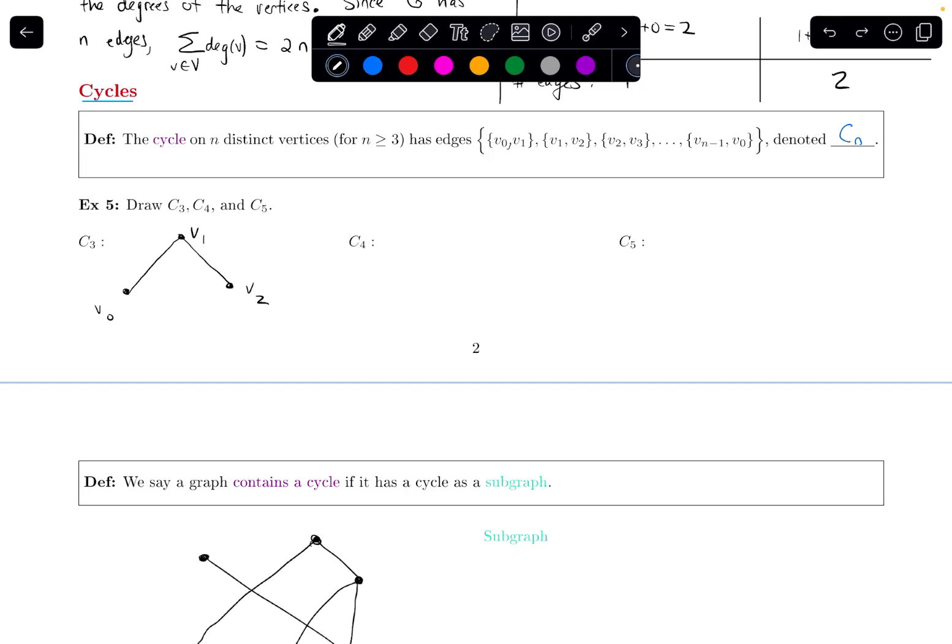Once I've reached that last vertex, then I connect it back to my starting vertex. And that's what this last thing says. The last vertex, Vn minus 1, connects back to the starting vertex, V0. And that's a cycle.